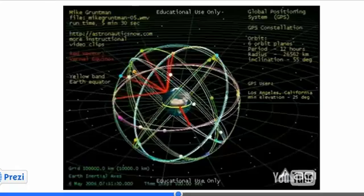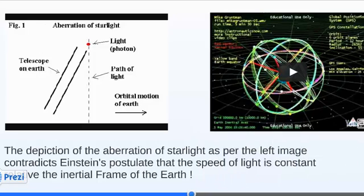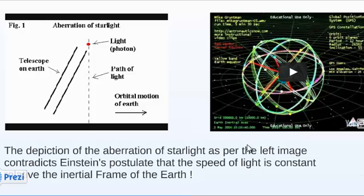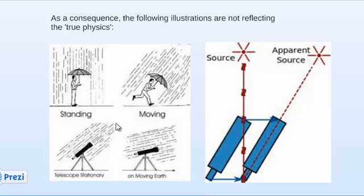Let's now consider how this impacts the way we look at the aberration of light. On the left hand side we have the explanation as per the theory of Bradley; on the right hand side we have the concept of the inertial frame of the Earth. In the left hand image, we give light the speed of 300,000 km per second plus the 30 km per second of the orbital motion of the Earth — which is in contradiction with the constancy of the speed of light relative to the inertial frame. As a consequence, illustrations such as the umbrella in the rain or the telescope on a moving Earth platform cannot be reflecting the true physics behind stellar aberration.